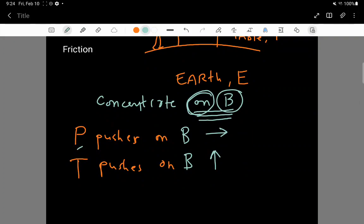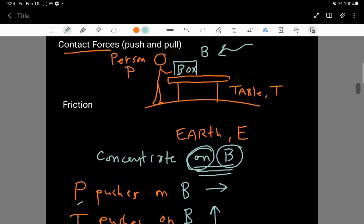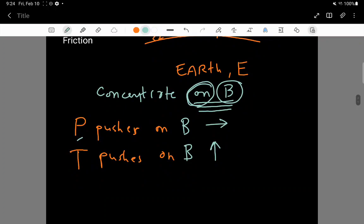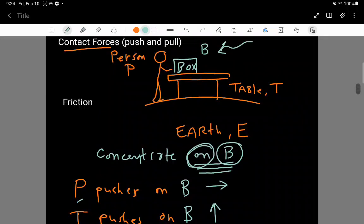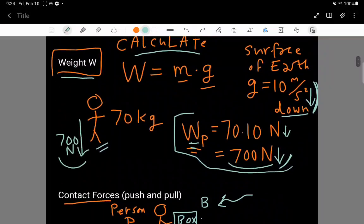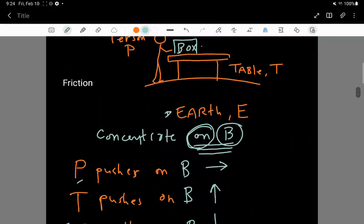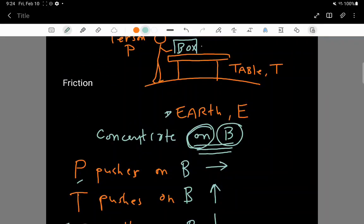The table pushes up on B. The person pushes to the right on B. And there's another force that's really interesting. The earth, E, pulls on the box B downwards. Remember, the earth is down here, and up here is the box. The earth is attracting the box downward using a weight force. So the earth is pulling the box down using a force called the weight force.